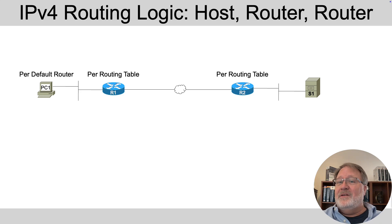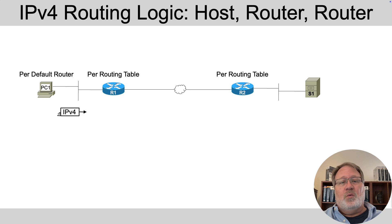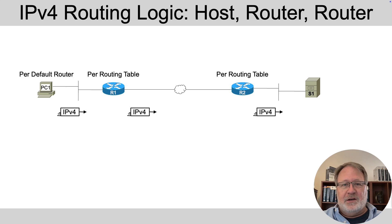IPv4 routing — packet forwarding — works much like IPv6. With IPv4, PC1 has a default router setting that refers to the IP address of a router in the same subnet, in this case R1, so it knows to send packets to R1 when the destination is off subnet. R1 has an IPv4 routing table and will match the packet's destination address to it, choosing to forward the packet to router R2. R2 has a routing table and compares the destination address to its routing table, choosing to forward the packet on to server S1.